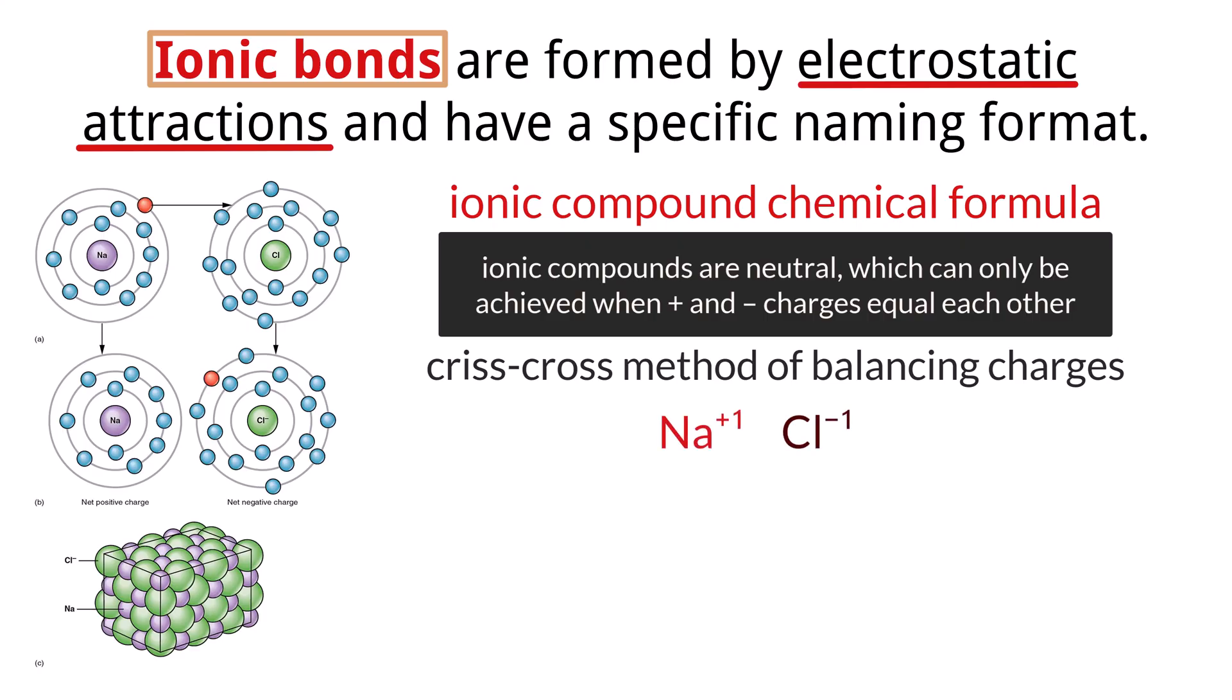For example, if we have a sodium ion and a chlorine ion, the charges are plus one and minus one. Crisscrossing gives us NaCl1, which simplifies to NaCl, the formula for sodium chloride.